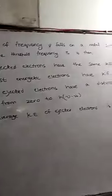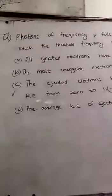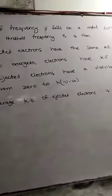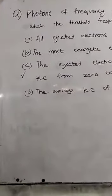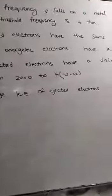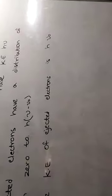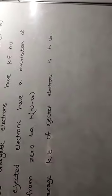So, photon of frequency nu falls on metal surface for which threshold frequency is nu not. All ejected electrons have the same kinetic energy like this? The correct option is option C. The ejected electrons have the distribution of kinetic energy from zero to H nu minus nu not. Very, very important.